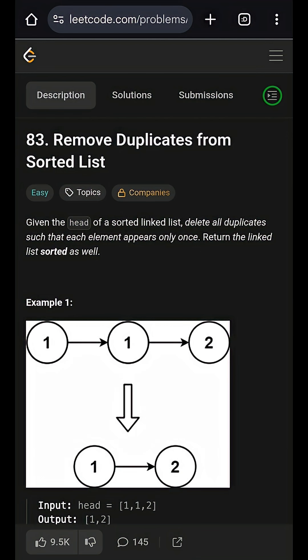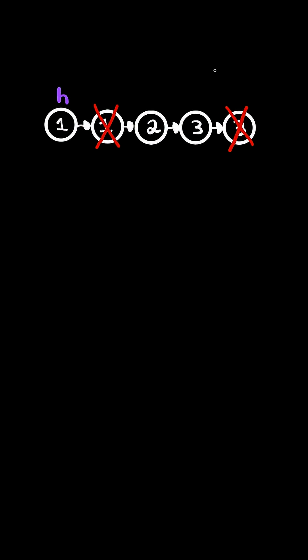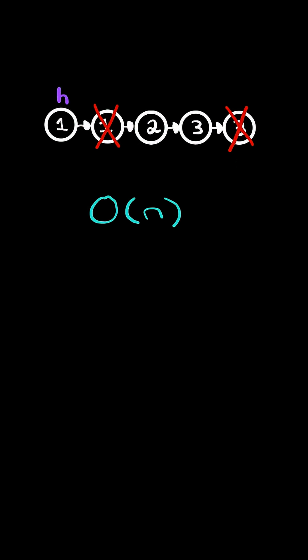Remove duplicates from sorted list. Given the head of a linked list sorted in increasing order, delete all duplicate elements in the linked list and return the list sorted in increasing order. We will solve this in O of n time.